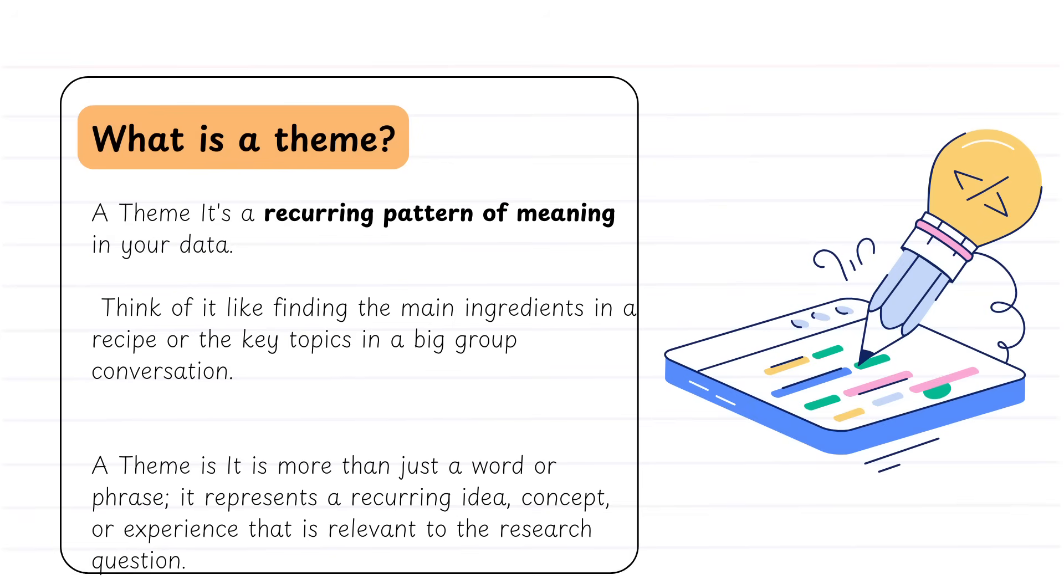So often when we talk about thematic analysis, you might hear the term theme. And what is a theme? Well, a theme is simply something that is a recurring pattern or meaning in your data. Think of it a little bit like a main ingredient in a recipe, or it might be the key topic in a debate or a group conversation. A theme is more than just a word or a phrase, however. It's a representation of a recurring idea, concept, or experience that's relevant to your research question.